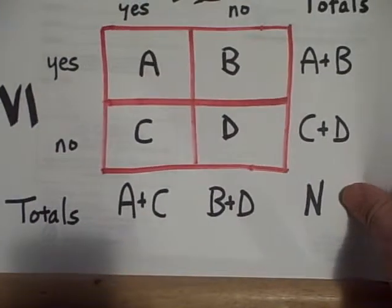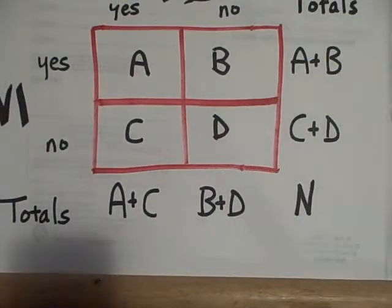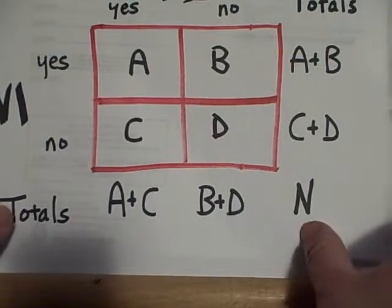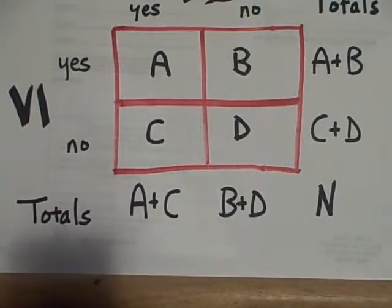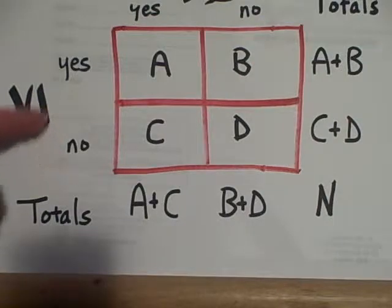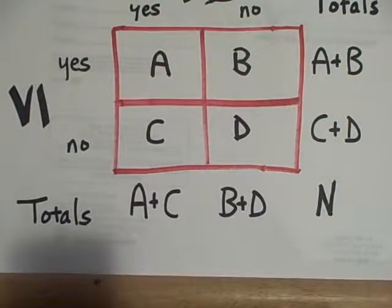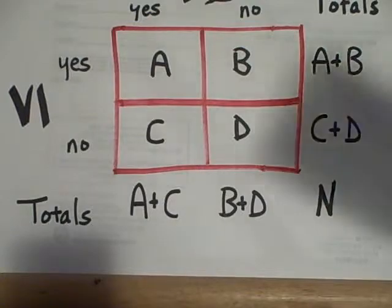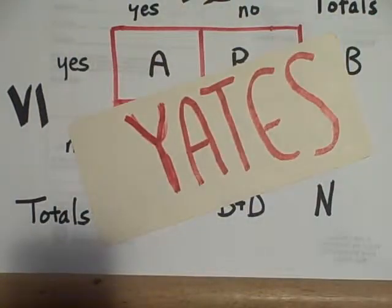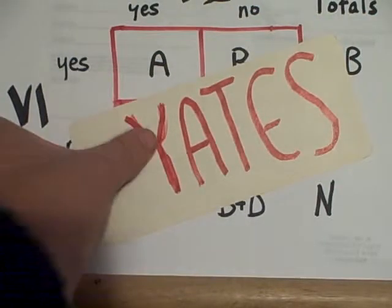For example, suppose you have two variables that you're trying to correlate — Variable 1 with two different categories, Variable 2 with two different categories — and you have this kind of two-by-two contingency table. Well, there's a version of chi-square for that, a pretty good one, called the Yates chi-square.